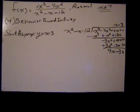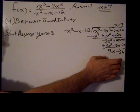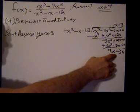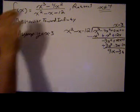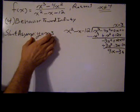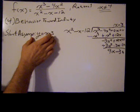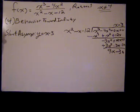You can set the numerator of the remainder, which is 9x minus 36, equal to 0. Or you can set the entire function equal to the slant asymptote and solve and see if you get a true statement. Usually, I would probably take the shortcut and say 9x minus 36 equals 0.